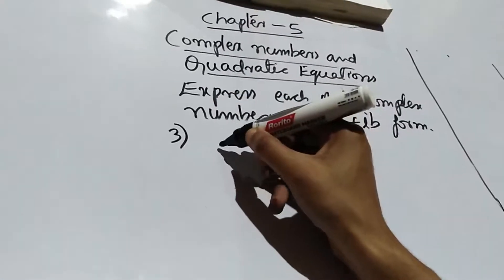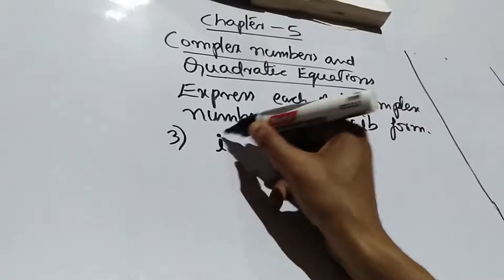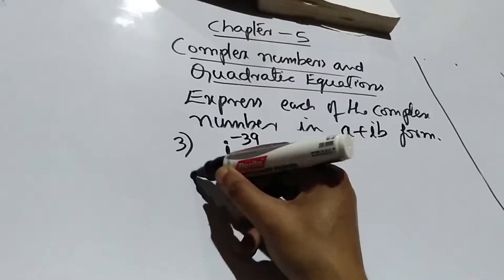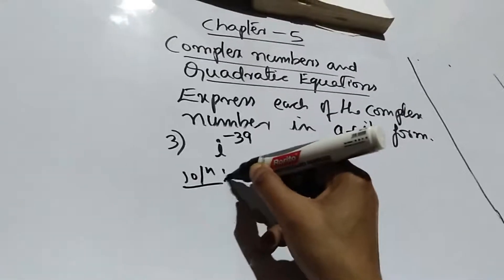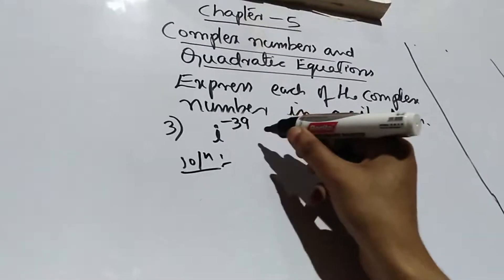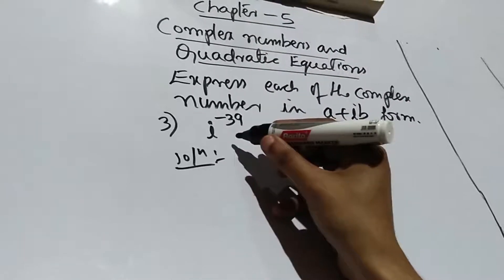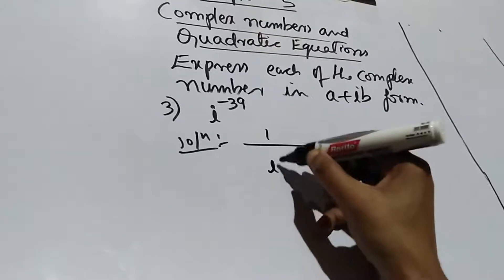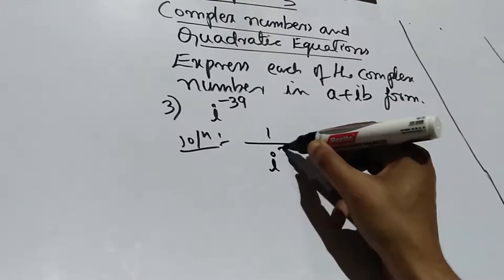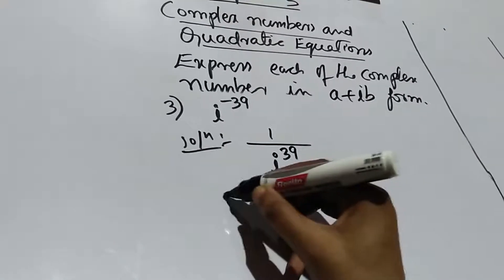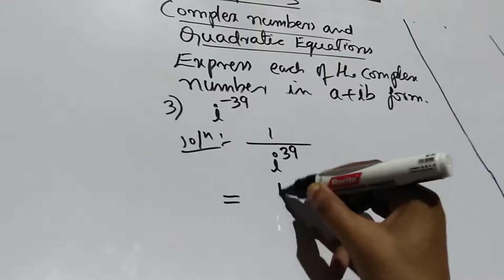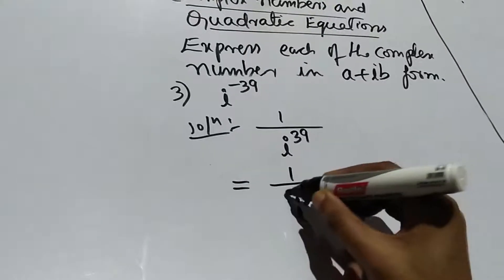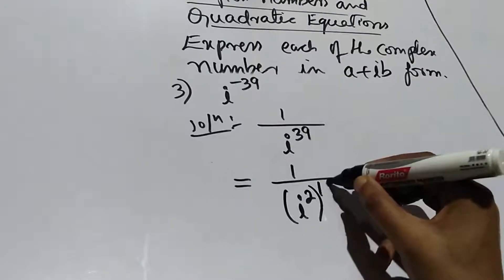Question number 3. We solve i to the power minus 39. We can write i to the power minus 39 as 1 divided by i to the power 39, which equals 1 divided by i squared, whole to the power 19.